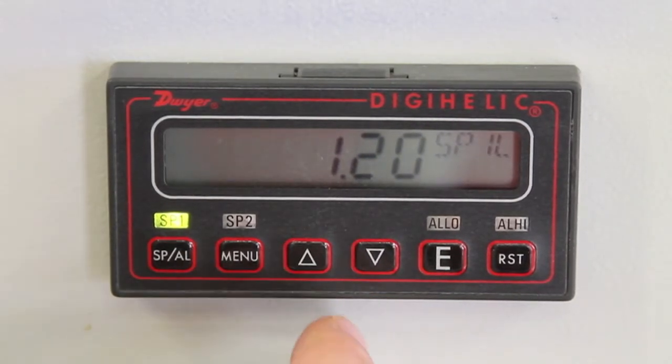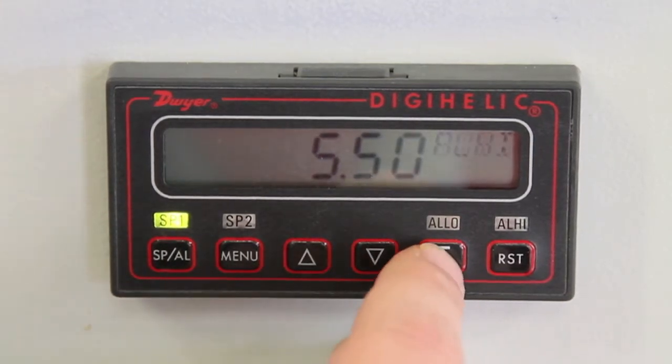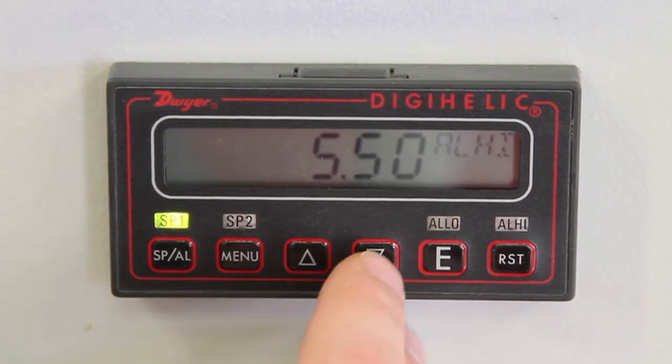We will now set our SP1L at a half inch of static pressure above our low set point. In this case it will be 1.7.